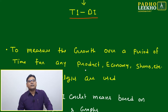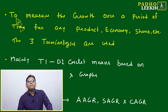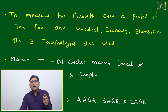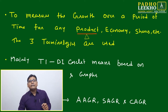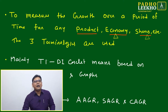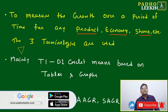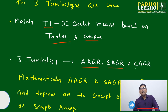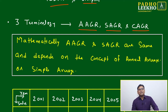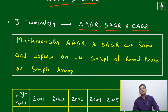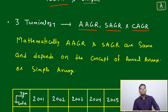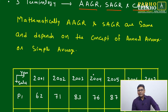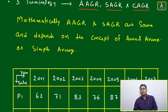These three terminologies are used mainly for Type 1 DI problems based on tables and graphs, to measure growth over a period of time for any product, economy, shares, etc. AGR and SGR are mathematically the same, based on the concept of arithmetic mean — simple or annual average. CAGR is based on geometric mean. So SGR/AGR depends on arithmetic mean, and CAGR depends on geometric mean.